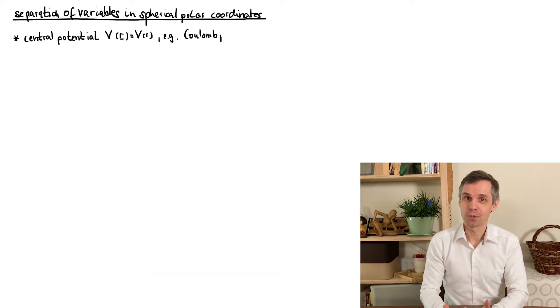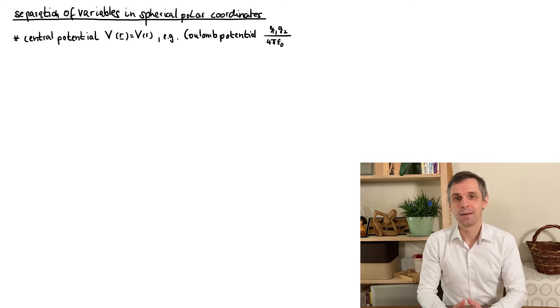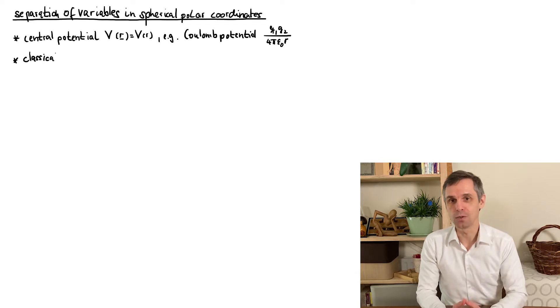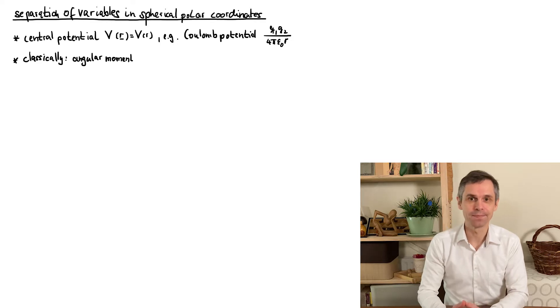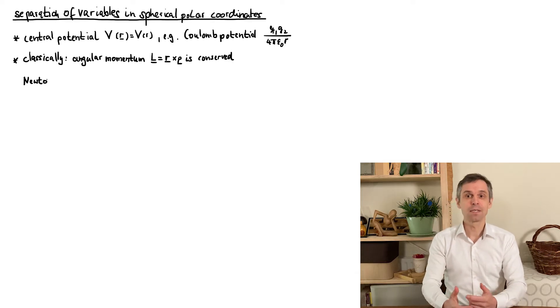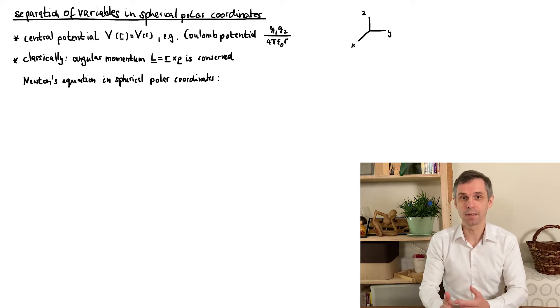And for the Coulomb potential separation in Cartesian coordinates fails. On the other hand we know from classical mechanics that the rotational symmetry is useful because it results in the conservation of angular momentum, which is defined as a cross product between position and momentum. We can exploit this for instance by writing Newton's equations of motion in spherical polar coordinates, so in terms of the radial distance r and the angles phi and theta.